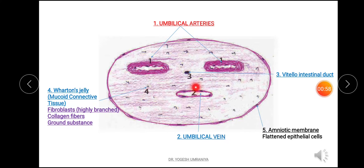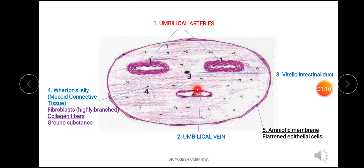Next is the umbilical vein, which is single in number. It has a very thin wall, but the lumen is quite larger and wider as compared to the umbilical arteries.